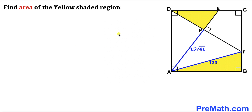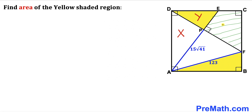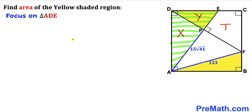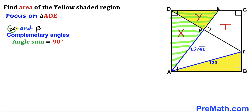Let's get started. Our very first step is to label the area of triangle APD as X, the area of yellow triangle EPD as Y, and the area of the quadrilateral as T. Next, let's focus on triangle ADE and assume that alpha and beta are two complementary angles.